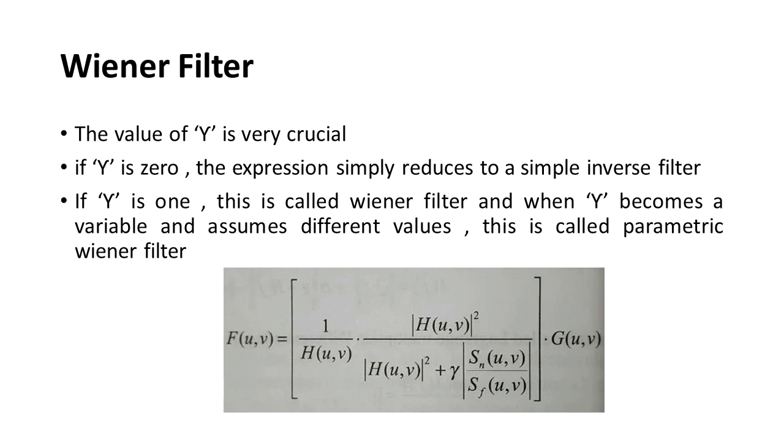In the first equation, gamma value changes Wiener filter functionality. If gamma is zero, the expression simply reduces to a simple inverse filter. If gamma is one, this is called Wiener filter, and when gamma becomes variable and assumes different values, this is called parametric Wiener filter.